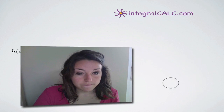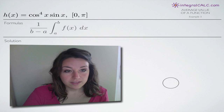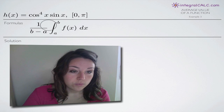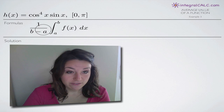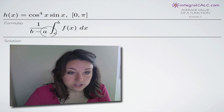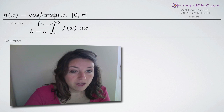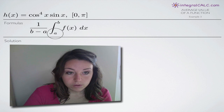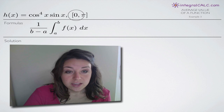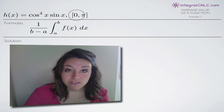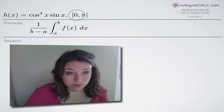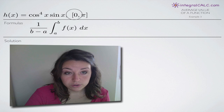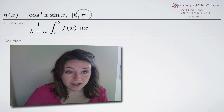The formula that we're going to be using for the average value is one over b minus a, which gives us the average part on the range of the function, and we're going to be integrating on the limits of integration a to b. In this case, they've given us our range a to b — it's zero to pi. So zero is a and pi is b.